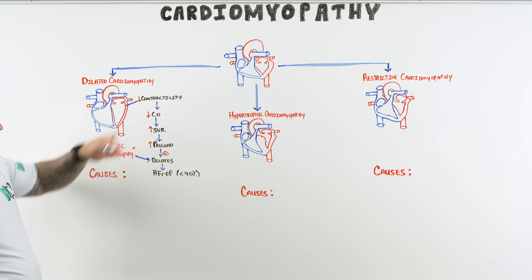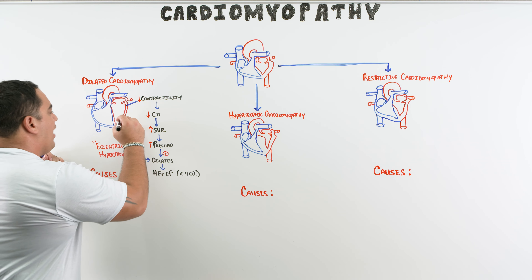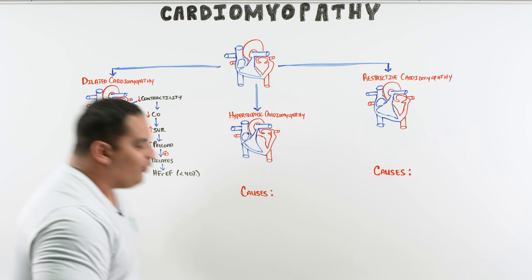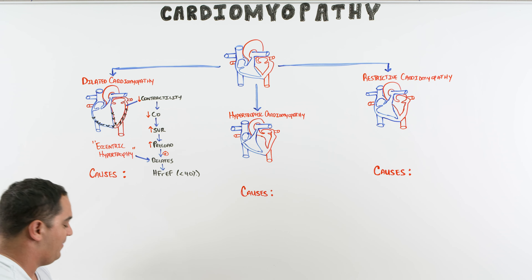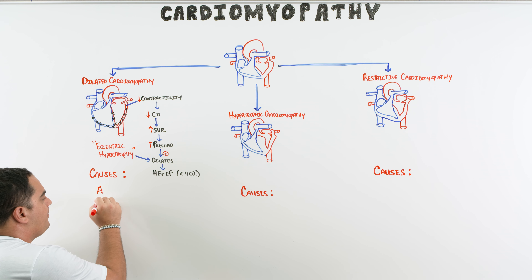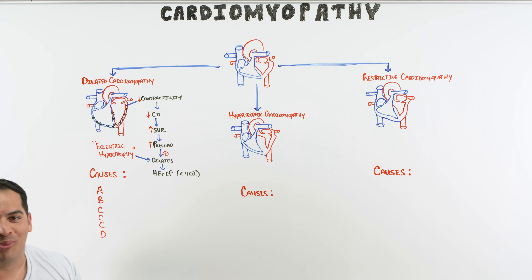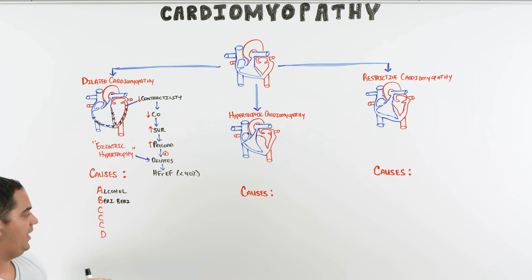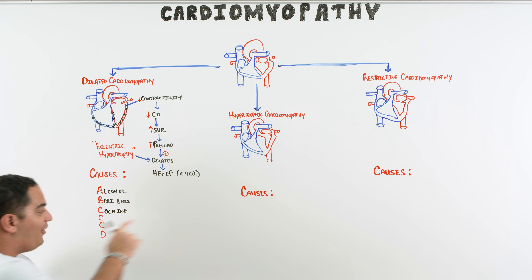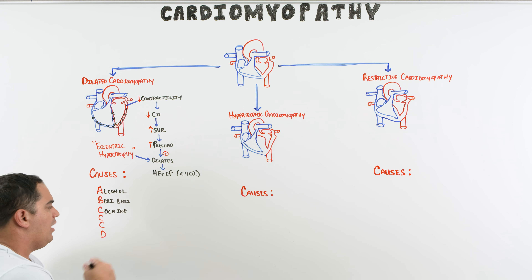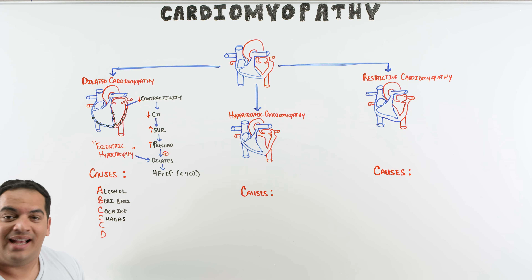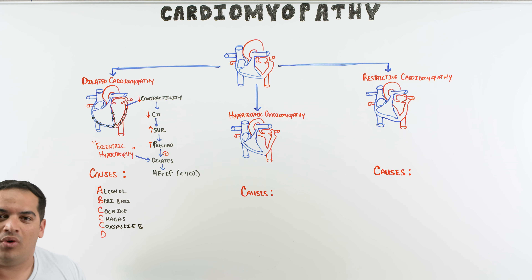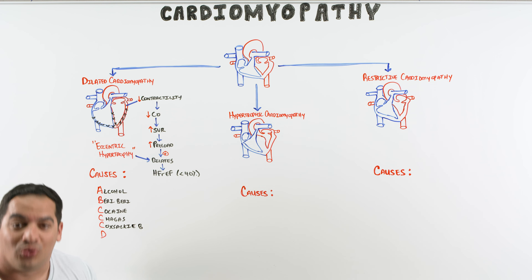So what causes the reduction in contractility? There's a helpful mnemonic: A-B-triple C-D. A is for alcohol, B is for beriberi (thiamine deficiency), C is for cocaine toxicity, the next C is for Chagas disease (Trypanosoma cruzi), another C is for Coxsackie B virus — probably one of the most common causes — and D is for doxorubicin, a common chemotherapeutic agent.